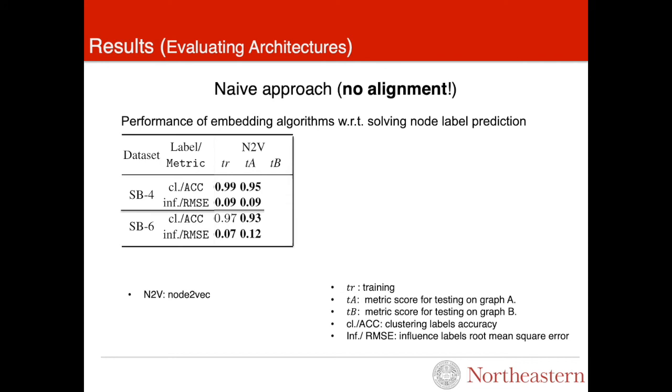We use the naive solution for node2vec graph embedding method and measure accuracy and root mean square error, both predicting labels in graph A and in graph B. When we see the performance scores on graph A, the results are really good. But when we transfer the learned model from graph A to graph B, we can see there is a huge gap between the performance scores on graph A and B. This is evident by the close to random guess accuracy for classification tasks and high root mean square error for regression tasks over graph B.